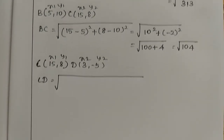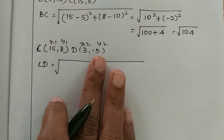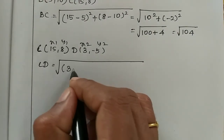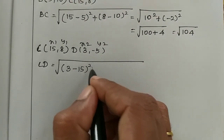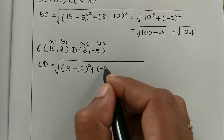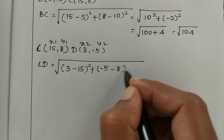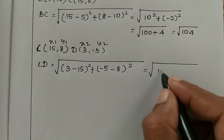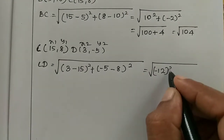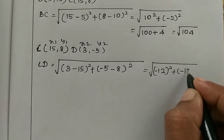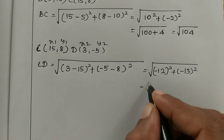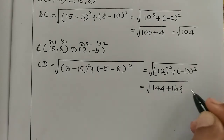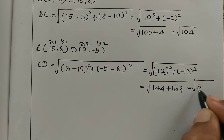Next CD length. C and D points: x2 is 3 minus x1 is 15, whole square, plus y2 is minus 5 minus y1 is 8, whole square. Which equals minus 12 squared plus minus 13 squared. So 144 plus 169, which equals root of 313.